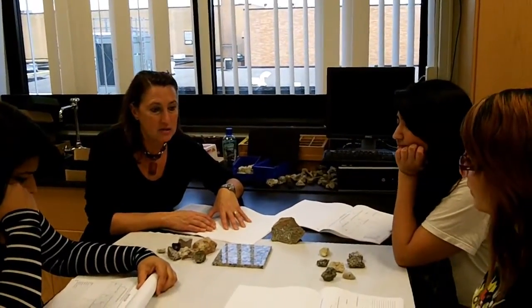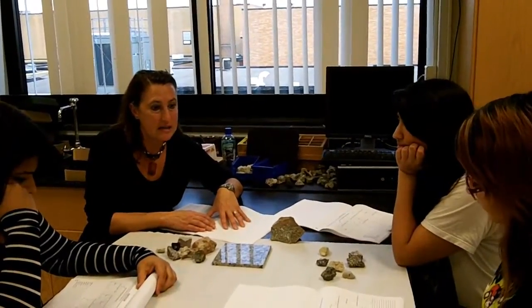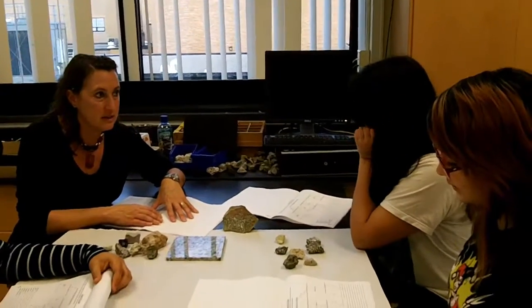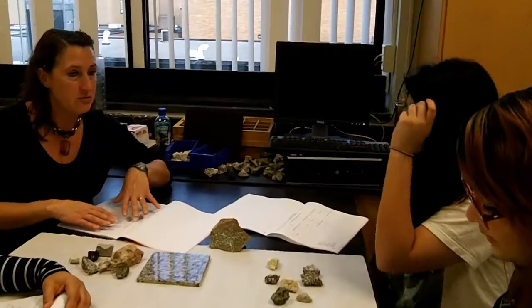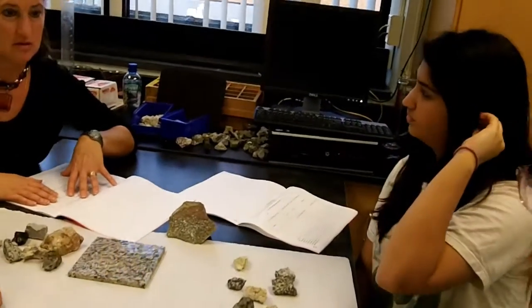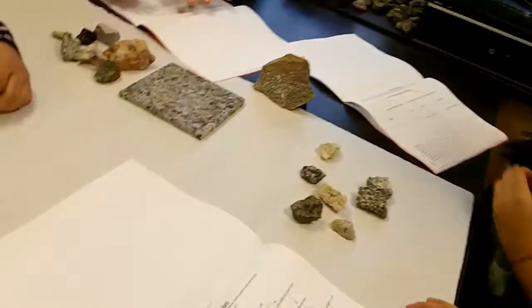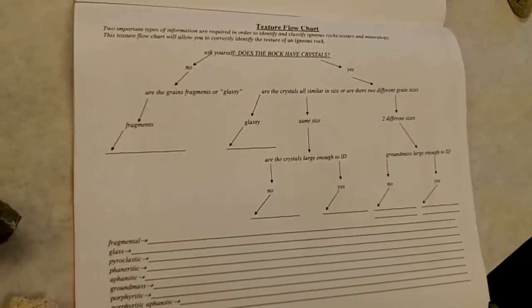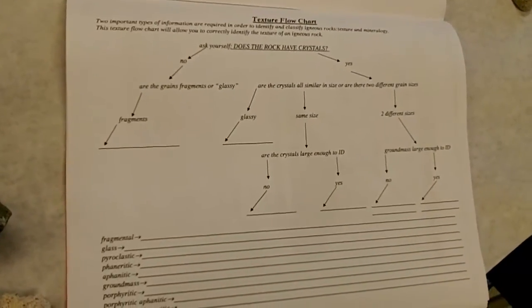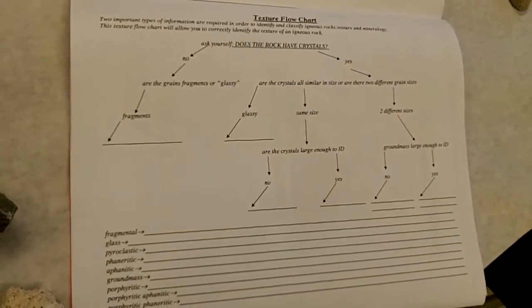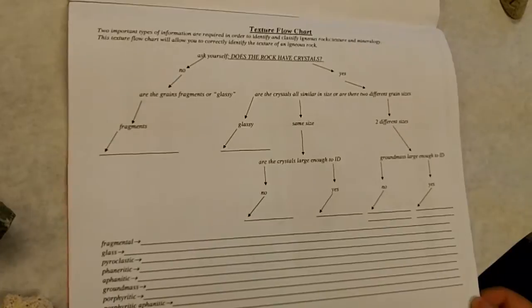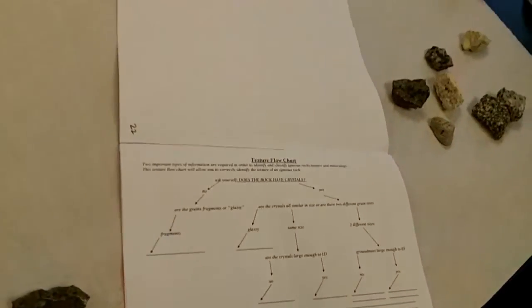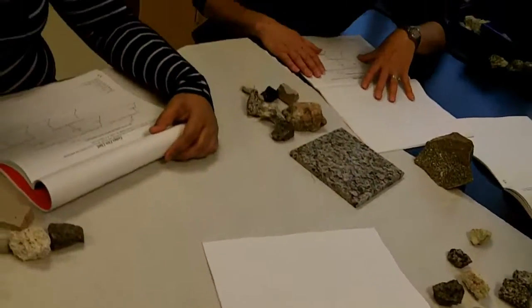To help us out, I made a texture flowchart. If you use this flowchart for each and every igneous rock that you identify, you're going to get the texture of each and every rock correct first try.